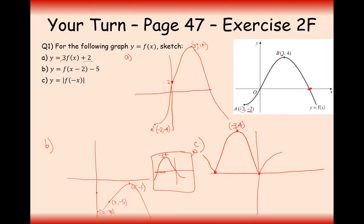For the coordinate (minus 2, minus 2): it got reflected over to (2, minus 2), and then the modulus brings the negative y-coordinate up to the top — so it's now at (2, 2). The (0, 0) coordinate stays where it is.